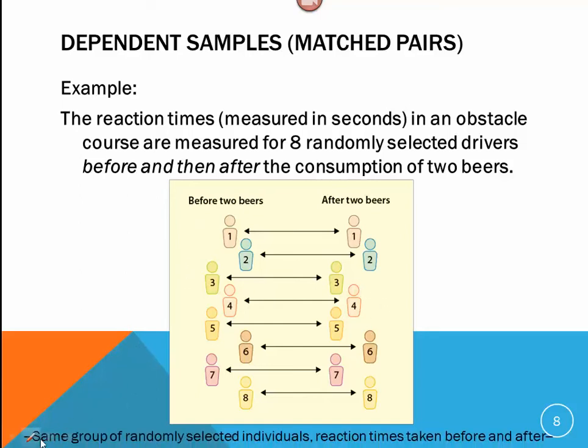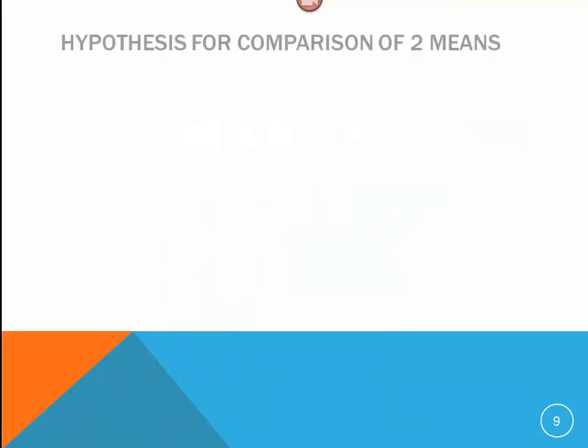So, in a dependent sample, we have the same group of randomly selected individuals, but the reaction times are taken in a before and after scenario. This might also apply in a pre-test, post-test scenario for someone who's gone through a class, that type of thing. We handle these very differently.